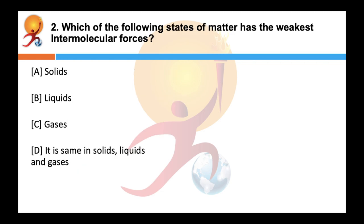Which of the following states of matter has the weakest inter-molecular forces? Answer is C — gases. The three states of matter vary from each other due to the different magnitude of inter-atomic and inter-molecular forces, and the extent of random thermal motion of atoms and molecules, which also depends on temperature. Inter-molecular forces are strongest in solids and weakest in gases.